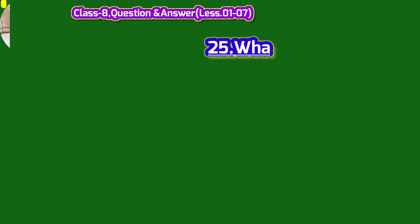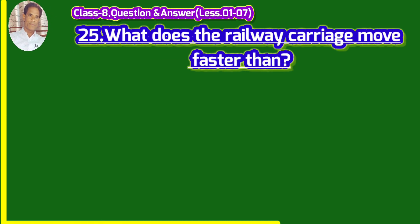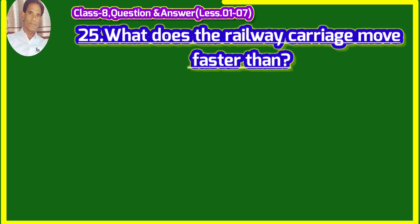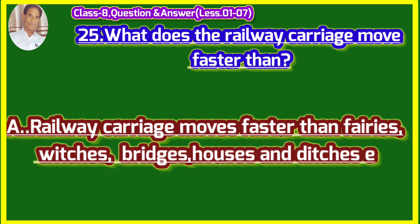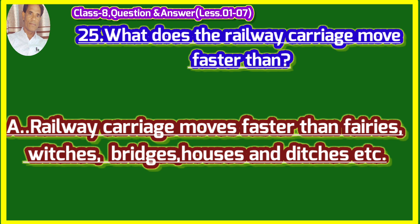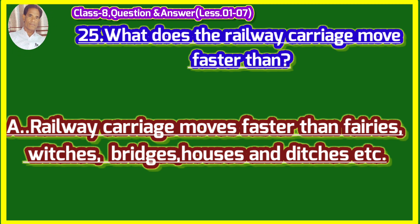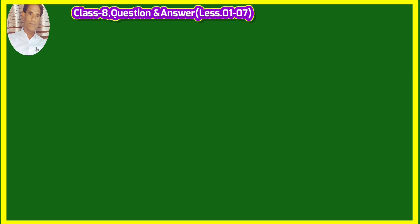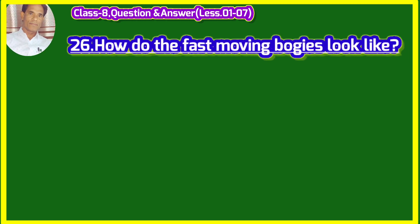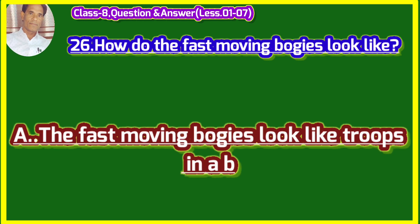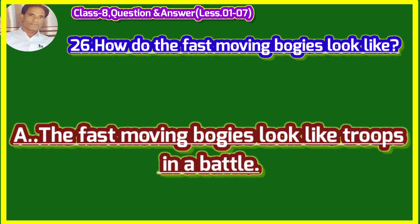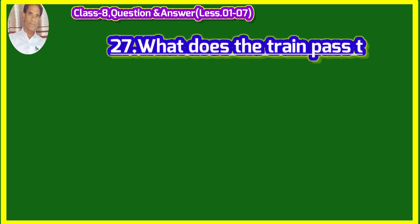What does the railway carriage move faster than? The railway carriage moves faster than witches, bridges, houses, hedges and ditches, etc. Rail gariya pariyon, jadugarniyon, pulon, gharon, jhaadiyon tatha khaiyon aadi se tej chalti hai. How do the fast moving bogies look like? (Tej gati se chalti rail ka dibba kaisa dikhta hai.) The fast moving bogies look like troops in a battle. Tej gati se chalti rail ka dibba yuddha ke sainiyon ki toli jaisa dikhta hai.